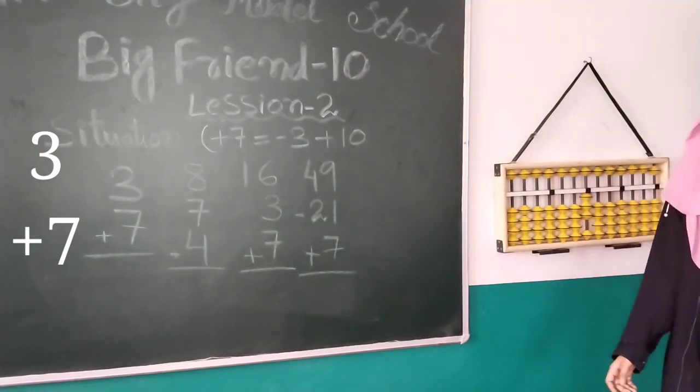And then 7 karne ke liye humare paas roadway beads available nahi hai. 7 again jayega Big Friend ke paas help karne ke liye. But Big Friend's condition kya hai? Apne best friend 3 se katti karo. And then Big Friend will arrive. So the answer is 10.